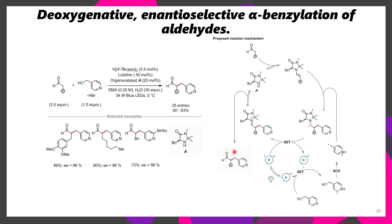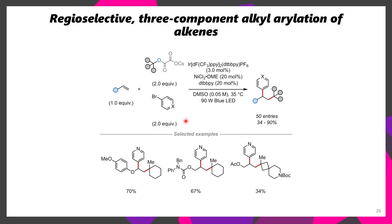What if we added in this oxalate salt but then also added in a bromide and did some metallophotoredox? Well, in this case it's possible to take an alkene and add in both this tertiary center as well as this arene to generate the products shown here. They even did 50 examples.